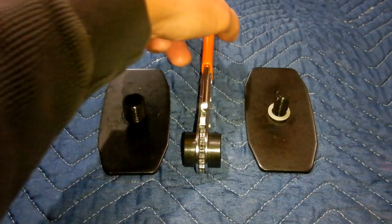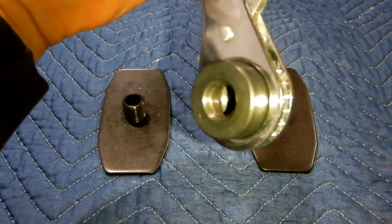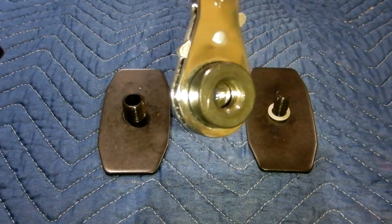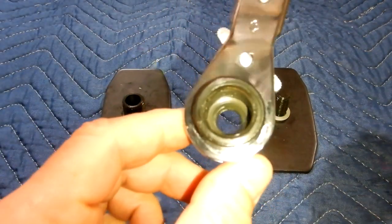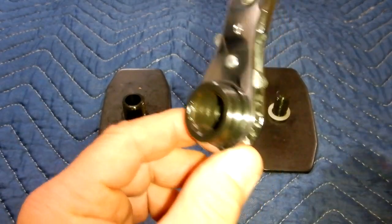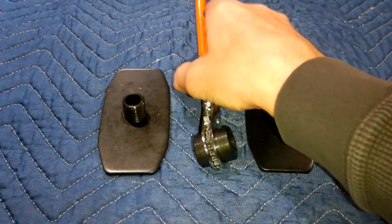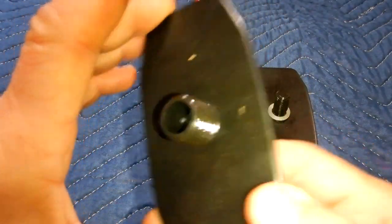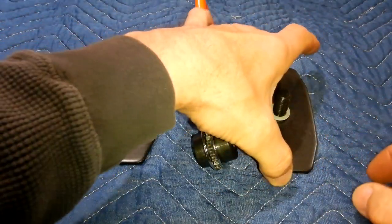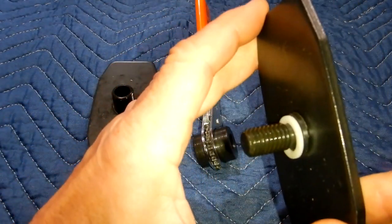Let's examine these. You'll notice that this side is threaded smaller than the opposite side. And as would make sense, this pad has the larger thread, this side has the smaller thread.